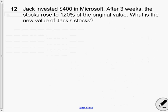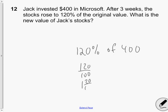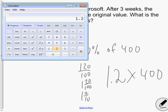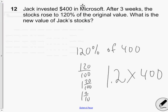Your next question Jack invested $400 in Microsoft. Now investing means you buy a share of the company. After three weeks the stocks rose 120% of the original value. What is the new value of Jack's stocks? So really we're looking for 120% of the $400 he invested. 120% is 1 and 2 tenths of $400. His stock is now worth $480.